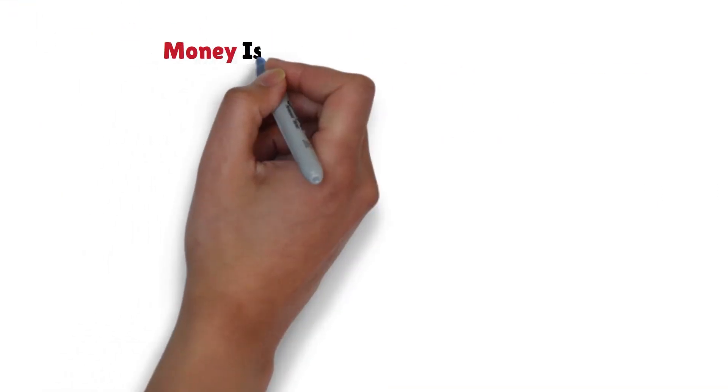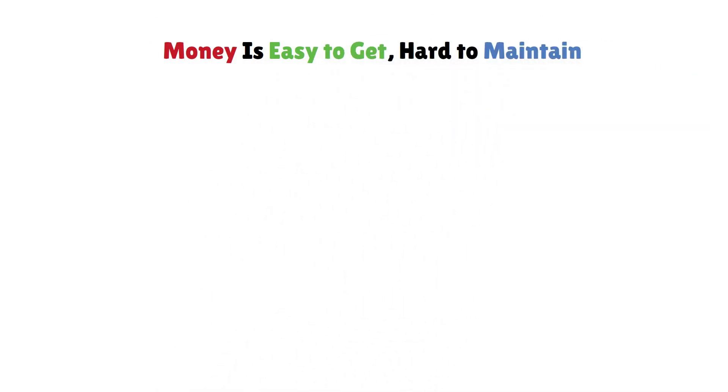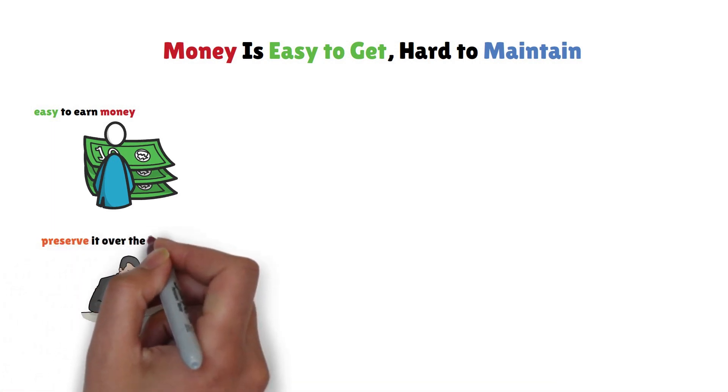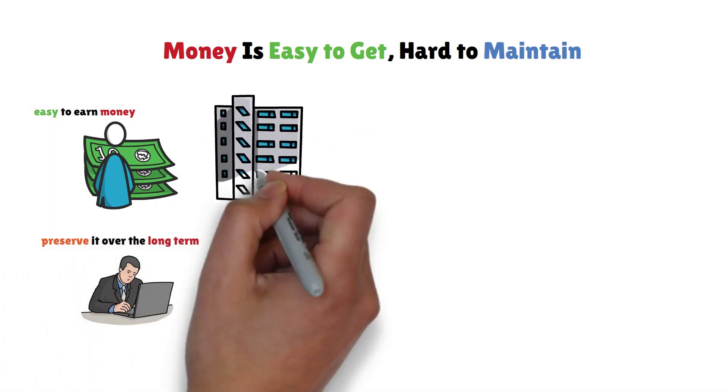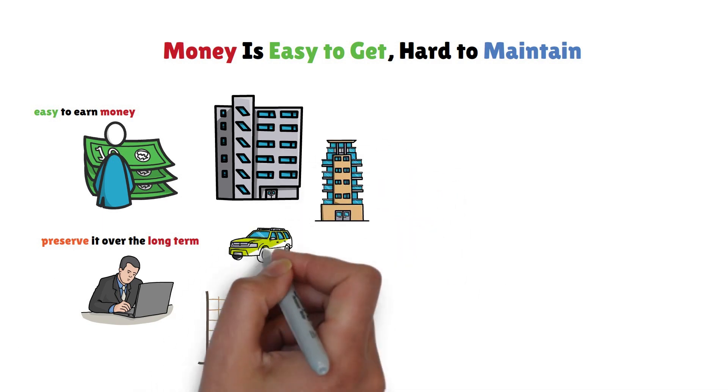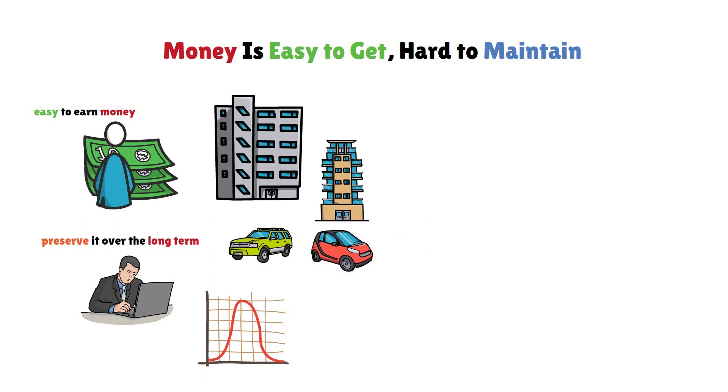Rule 6: Money is easy to get, hard to maintain. Many individuals can make money relatively easily, but struggle to preserve it over the long term. It's often accompanied by what we call the Big Check Syndrome, where sudden windfalls lead to reckless spending and lifestyle changes.